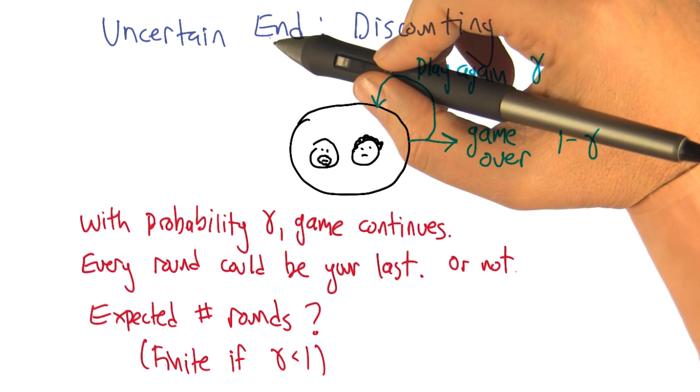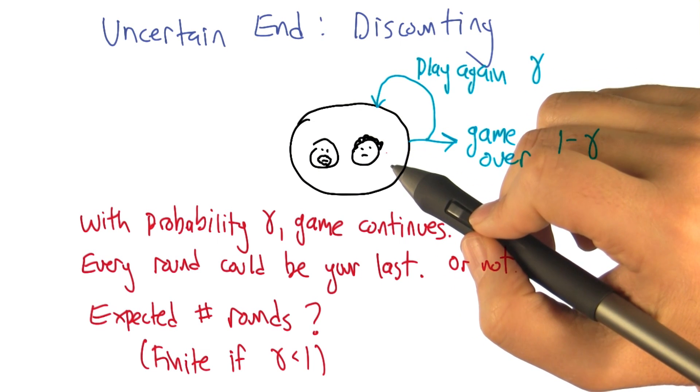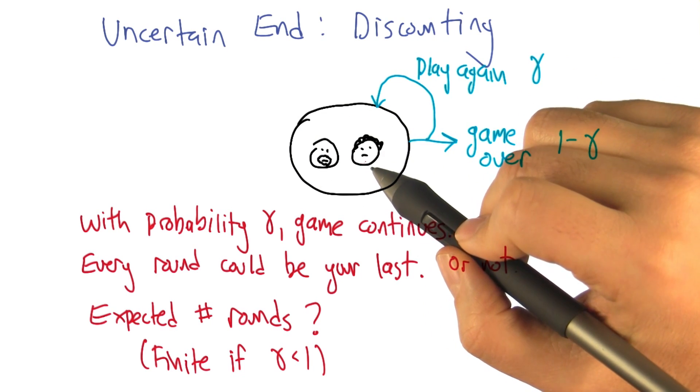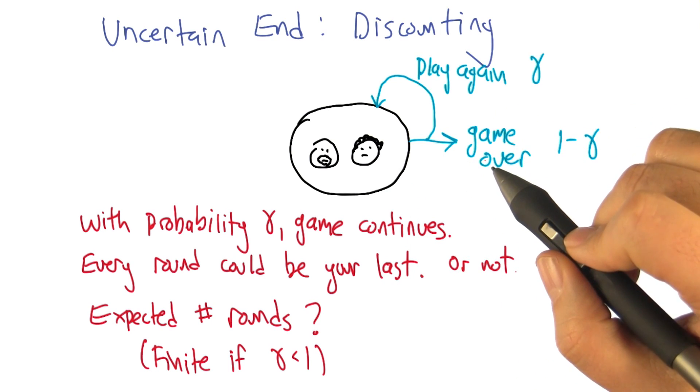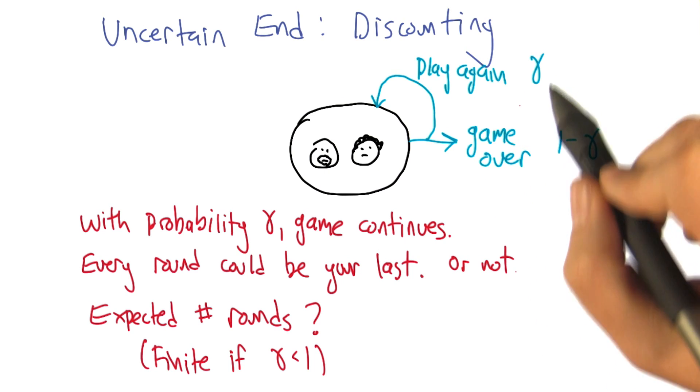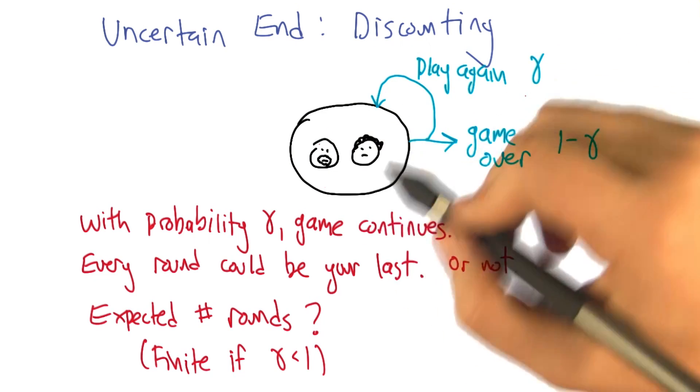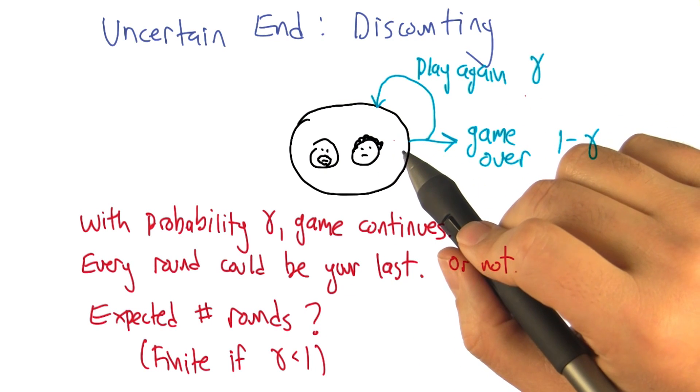But this seemed like the simplest idea that I could think of. So here we have our two criminals, and what they're going to do is they're going to play a round of prisoner's dilemma. But at the end of that round, they're going to flip a coin. And with probability 1 minus gamma, that will be the last round, it's all over. But with probability gamma, they're actually going to play again. And they do this after each round. And so each round is basically statistically independent of the other rounds.